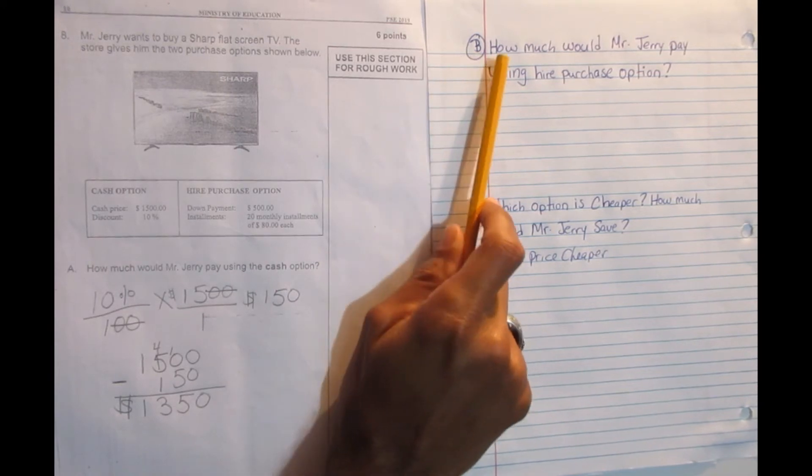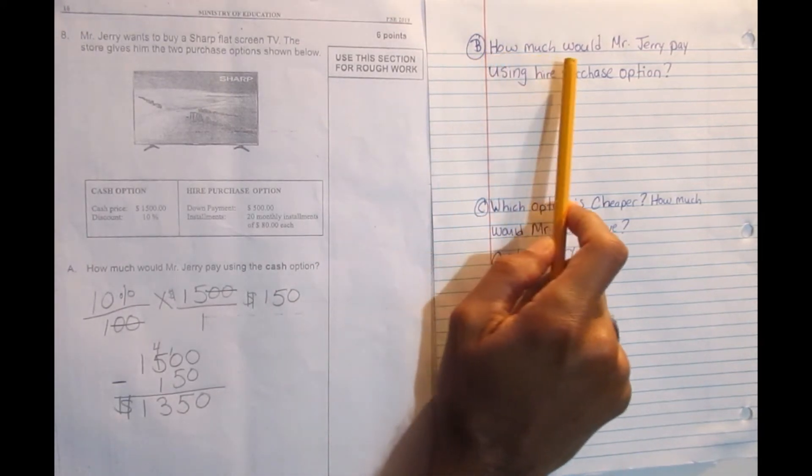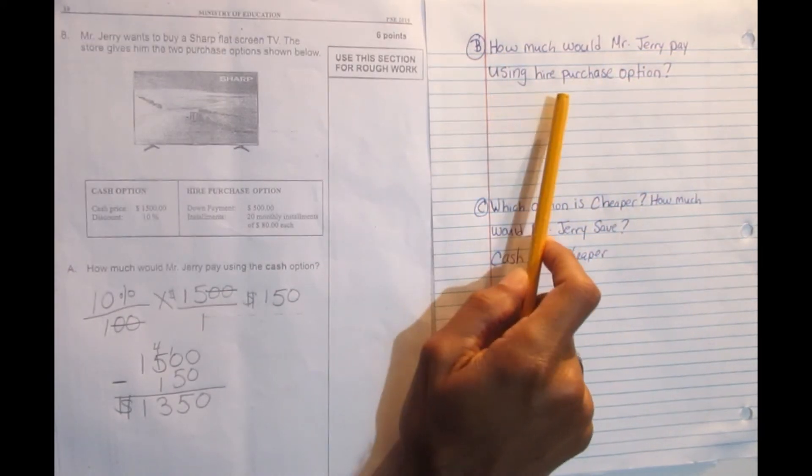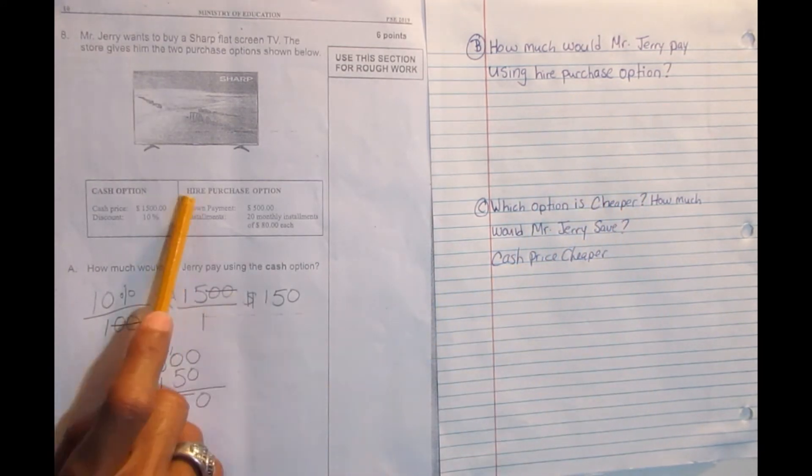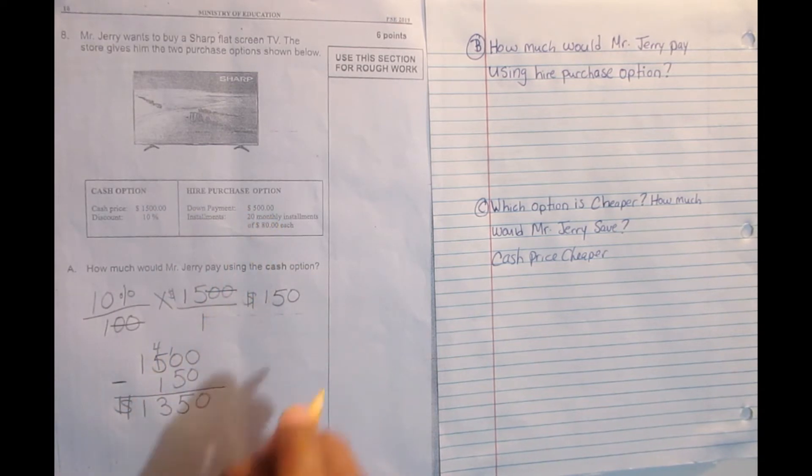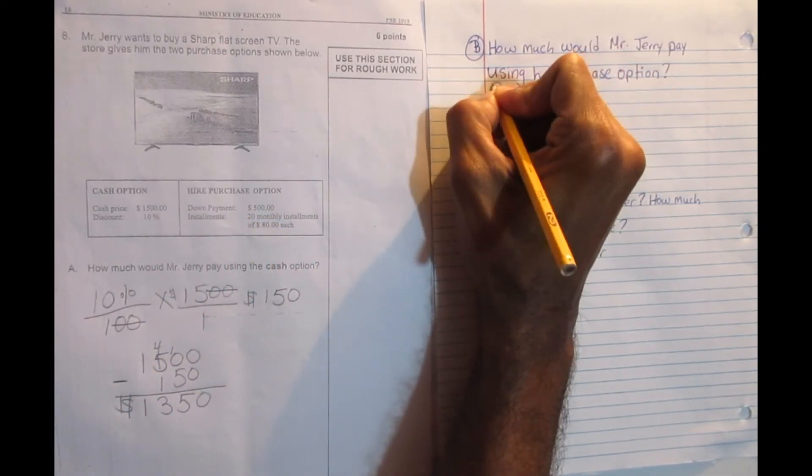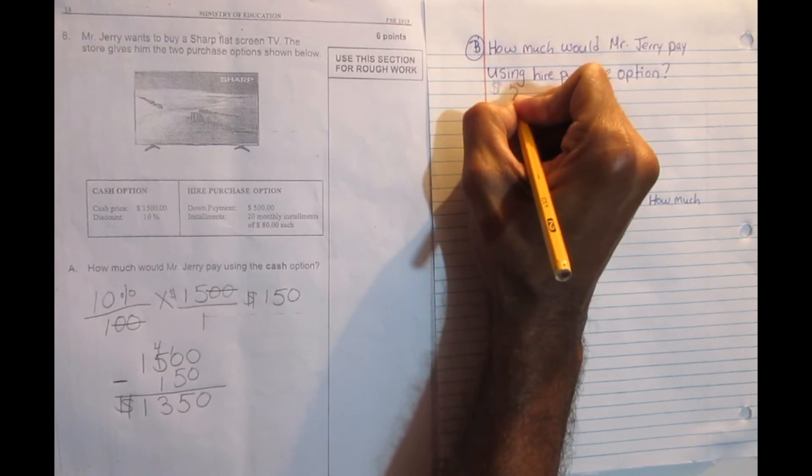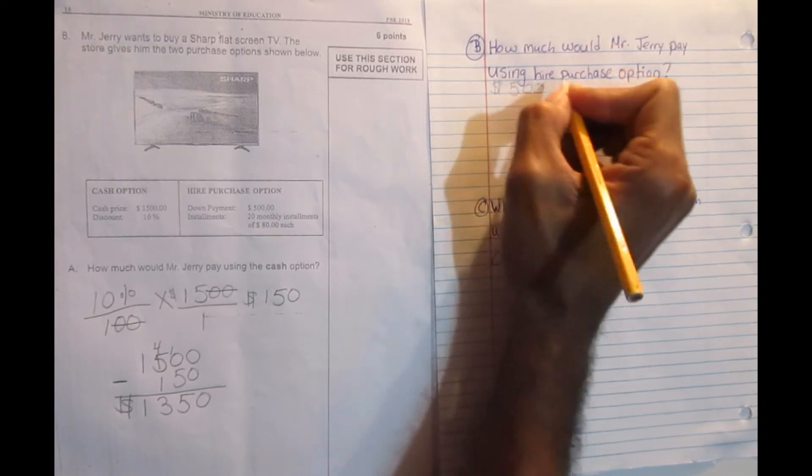As we continue, we go with B. B asks how much would Mr. Jerry pay using the hire purchase option. Based on the hire purchase option here, you're going to do a down payment of $500. So before you get the TV, first thing you have to do is to pay down $500. So I'm going to place that here, $500 paid down.